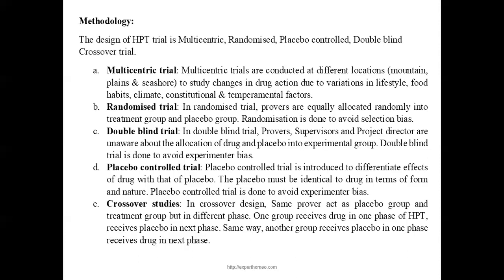When comparing Hahnemannian drug proving with modern HPT, there are similarities and dissimilarities. As a similarity, both adhere to the homeopathic philosophy. The primary aim of Hahnemannian drug proving as well as HPT is to elicit the pathogenetic characteristic symptoms of the drug — whether subjective or objective.